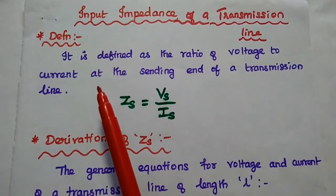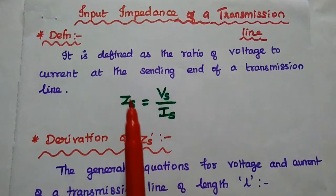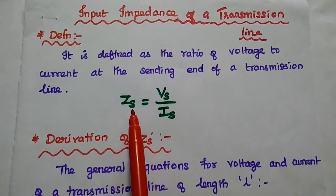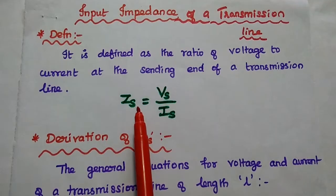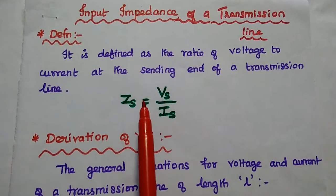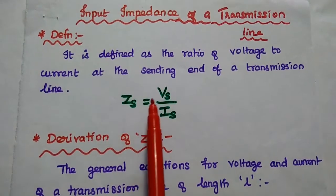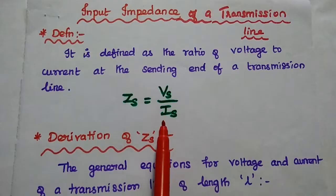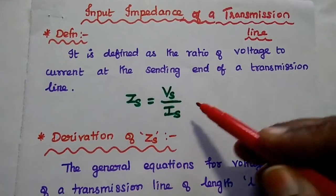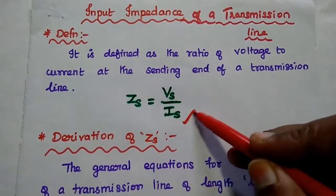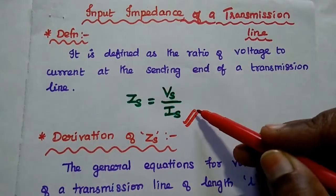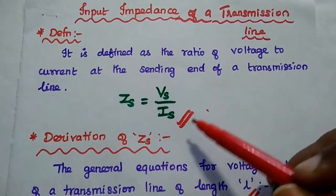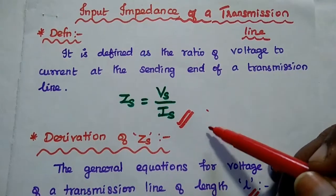Let's start with the definition. What is input impedance? That is the sending end impedance. That is equal to the ratio of sending end voltage to the sending end current. Voltage to current ratio is impedance. This is the definition of input impedance.